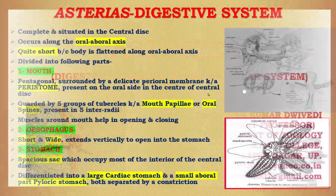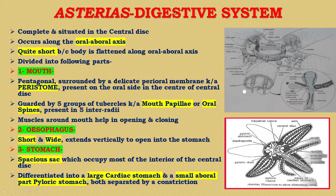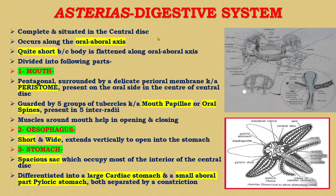The digestive system of Asterias is a complete system situated in the central disk. It occurs along the oral-aboral axis because there are two surfaces in the body: oral and aboral surface. The digestive system is quite short because the body is flattened along the oral-aboral axis. This system is divided into the following parts.